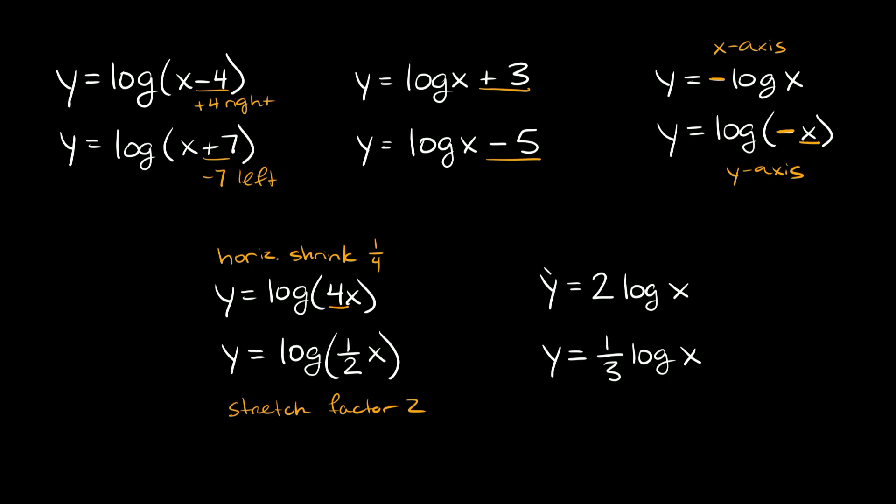And then lastly, we have these two. We have y equals 2 times log x. Here we have a number out in front of the log. When there's a number out in front, that indicates a vertical stretch or shrink. Vertical stretching and shrinking is more intuitive. If the number is bigger than 1, that would indicate a stretch. It's getting bigger, it's stretching. So this would be a vertical stretch by a factor of 2.